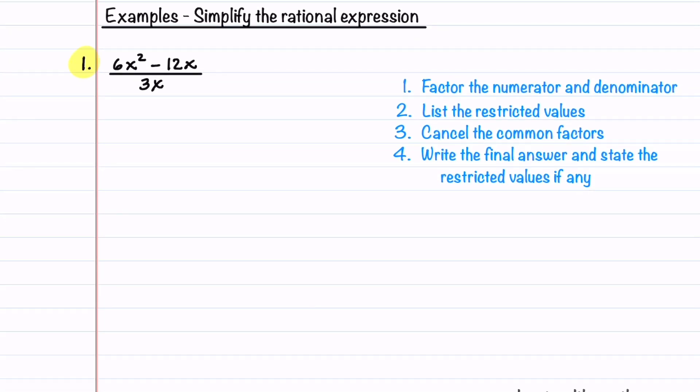Our first example is not as complicated as the next two so that we can make sure we understand the steps. I've listed the steps on the right so we can easily see what we need to do. Let's start with the first step and factor the numerator and denominator. When we look at the numerator, we can see that 6x is common to both terms, so we can pull that out. That gives us 6x times x minus 2.